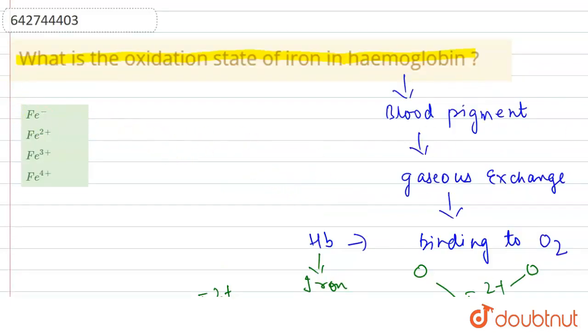From the given options, our correct option is option two, which is Fe²⁺, iron in the +2 oxidation state.